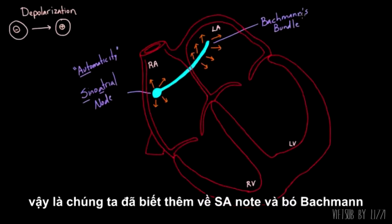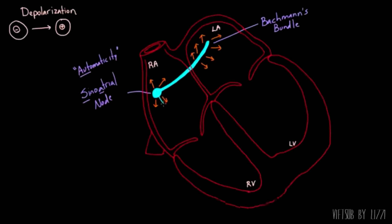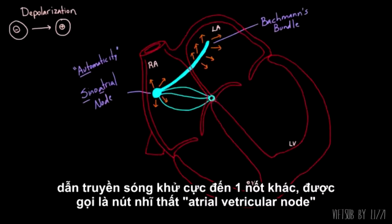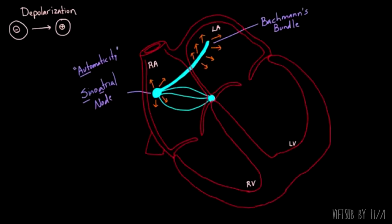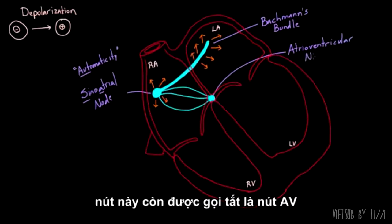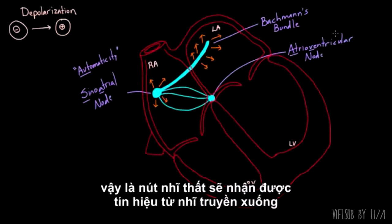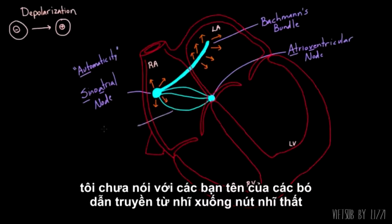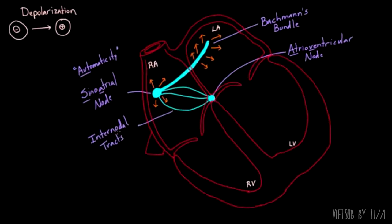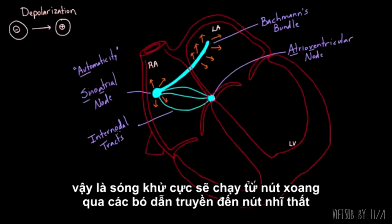Just like Bachmann's bundle, there are a few more little bands of tissue — almost like little highways — that take the signal down to another node called the atrioventricular node, or AV node. The AV node is really the only connection in most of us between the atria and the ventricles. The signal travels from the SA node through what are called intranodal tracks — meaning between two nodes — down to the AV node.